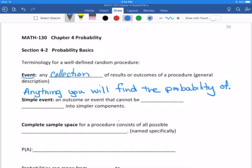So then after event, we can talk about a simple event. A simple event is an outcome or event that cannot be broken down into any simpler components. Like the example I gave of flipping a coin and getting a head, that's a simple event because it cannot be broken down into parts.